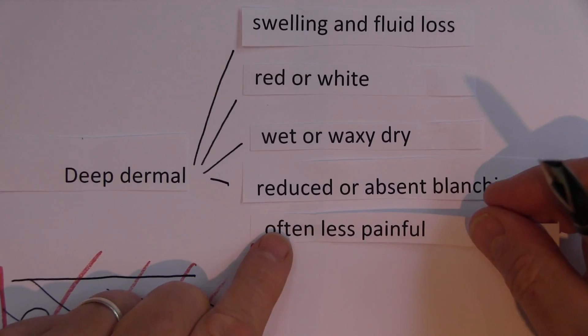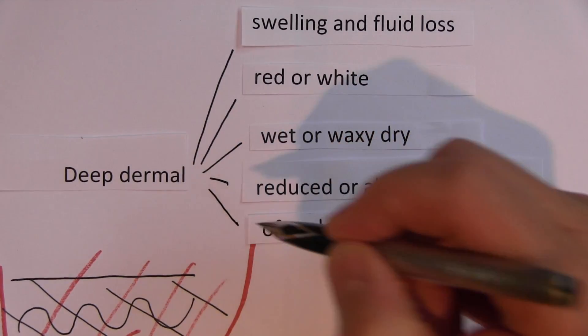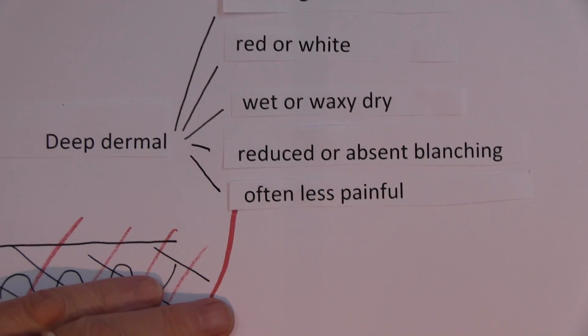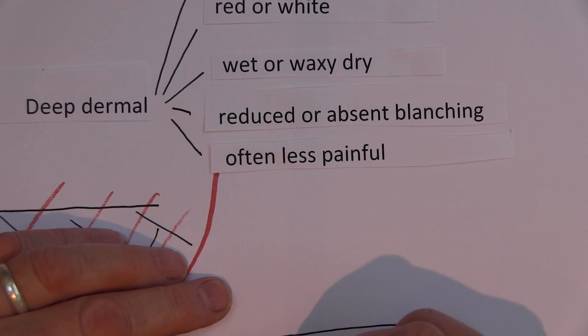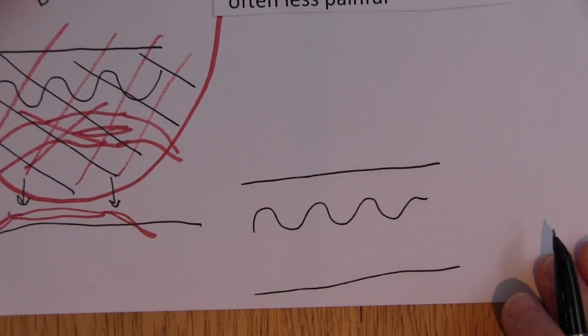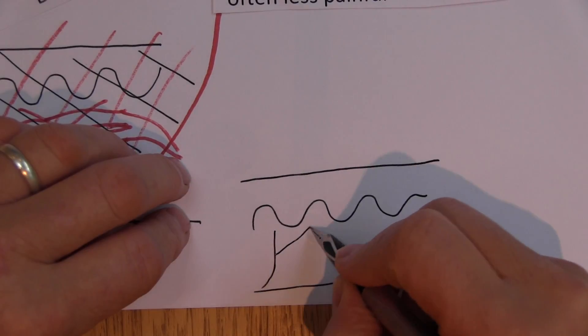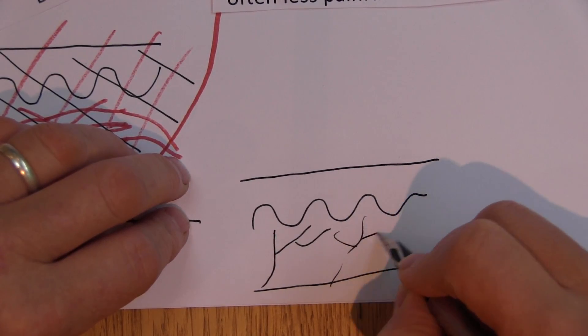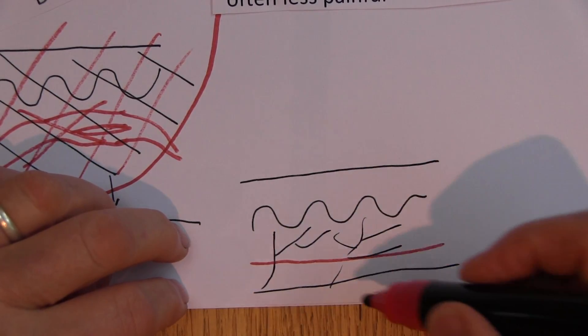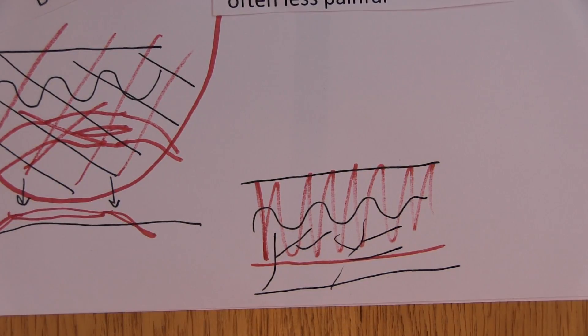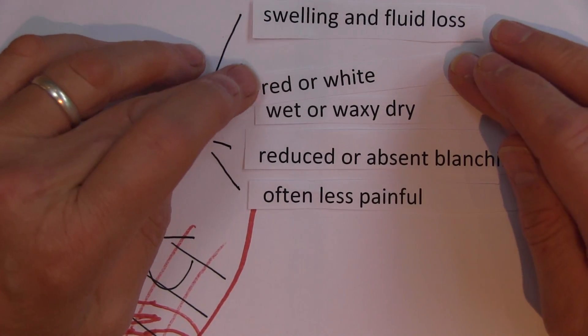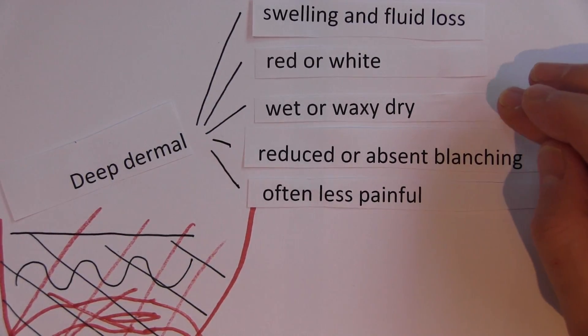And these burns are often less painful, often less painful in the area of the burn. So again, if we think of the skin here, the epidermis, the dermis, we know that the nociceptors are spread throughout the dermis. Then many of them are simply burnt away, simply burnt away, so there's less nociceptors to perceive the pain. So the pain is often less in the deep dermal compared to the shallow dermal burns.